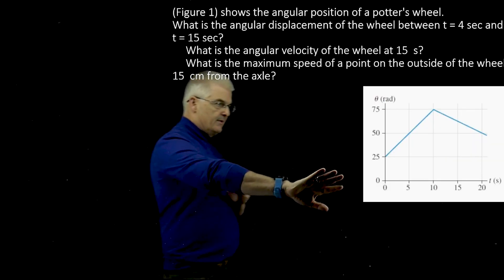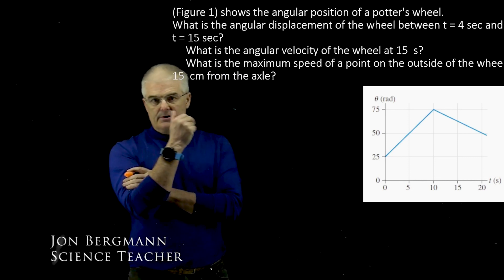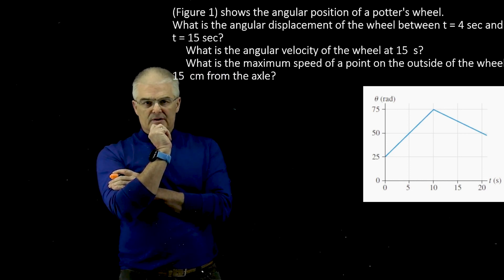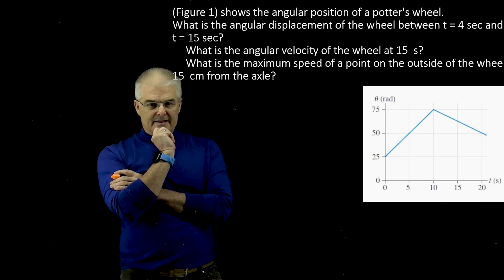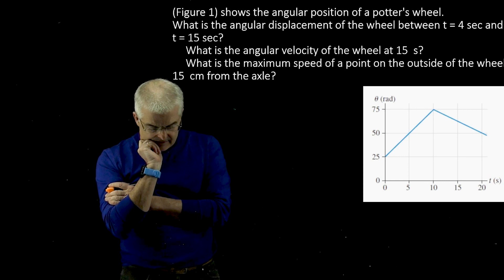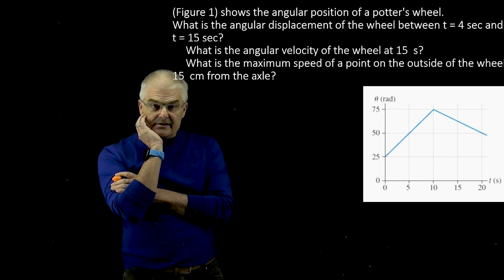So we've got the Potter's Wheel, we've got the graph right here, and we're trying to find the angular displacement of the wheel between T4 and T15. I think that was 5 and 15, actually. That's a typo.